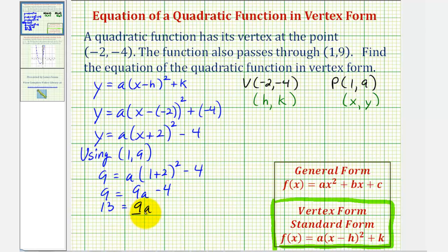Last step, divide both sides by nine. So we have a equals 13 ninths, which is the last thing we need to find the equation of our quadratic function.